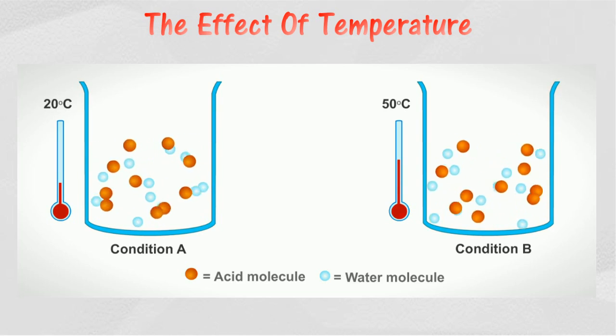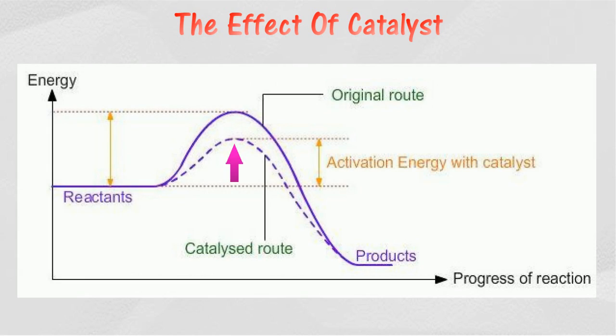Therefore the rate of reaction increases. A catalyst can increase the rate of reaction by lowering the activation energy of a reaction, thus providing an alternative route that requires a lower activation energy. With the alternative route, the frequency of effective collision that has a lower activation energy will also increase; therefore the rate of reaction increases.